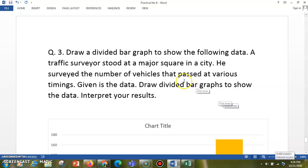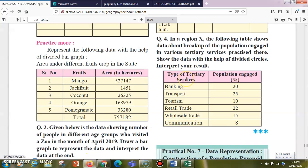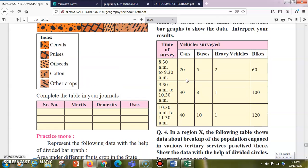Now let us see the third question. Draw a divided bar graph to show the following data. A traffic surveyor stood at a major square of the inner city and surveyed the number of vehicles that passed through at various timings. Given is the data - draw a divided bar graph to show the data and interpret your result. Now here the table is quite different. You can see there are some timings like 8:30 to 9:30, 9:30 to 10:30, and 10:30 to 11:30.